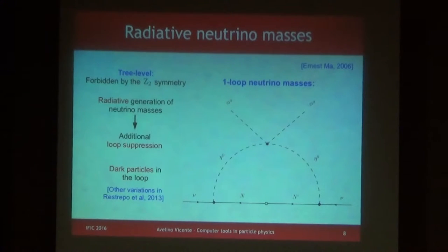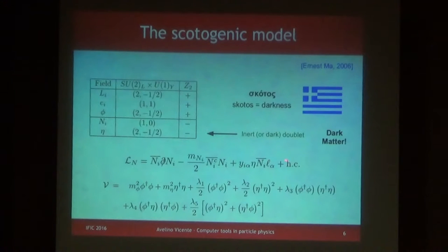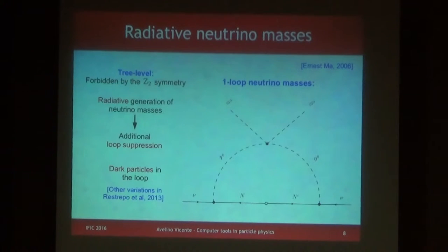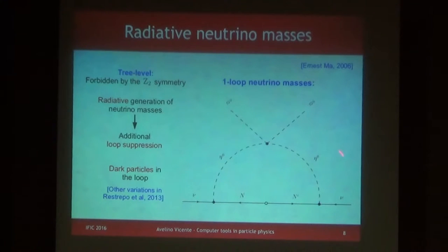The model is also interesting because it provides neutrino masses at the one-loop level. Since the charged leptons do not couple directly to the Higgs because of the Z2 symmetry — the field that appears in the Yukawa is eta, not the Higgs — and eta doesn't have a VEV by definition, you don't get neutrino masses at tree level. But you get them at the loop level in a diagram where the singlets and the eta fields run in the loop, and the lambda 5 coupling provides the necessary mass insertion. So this scotos — in Greek meaning dark — gives the name: Ernest Ma, who proposed this model, chose this name because you have dark particles running in the loop that provide masses to neutrinos.